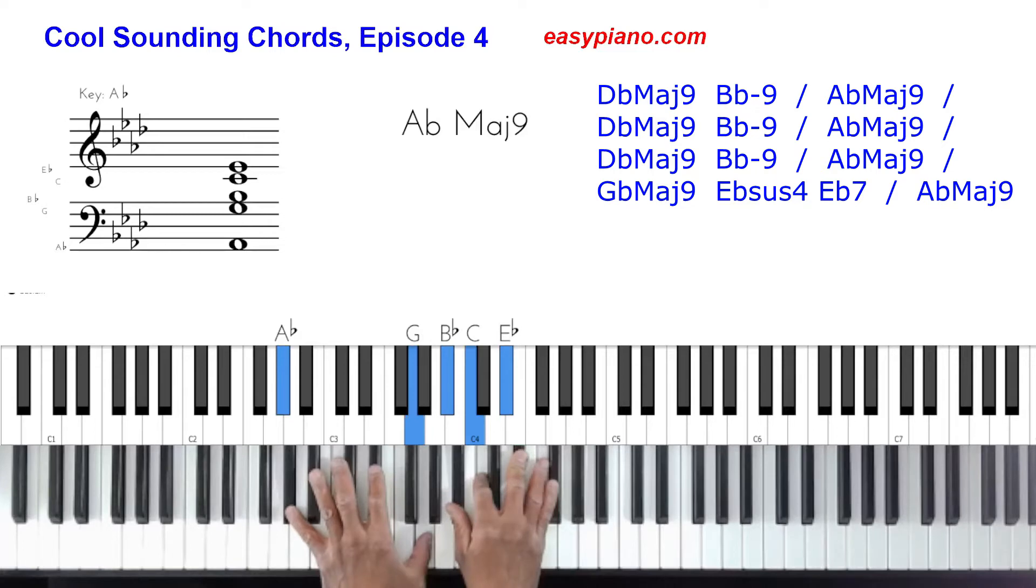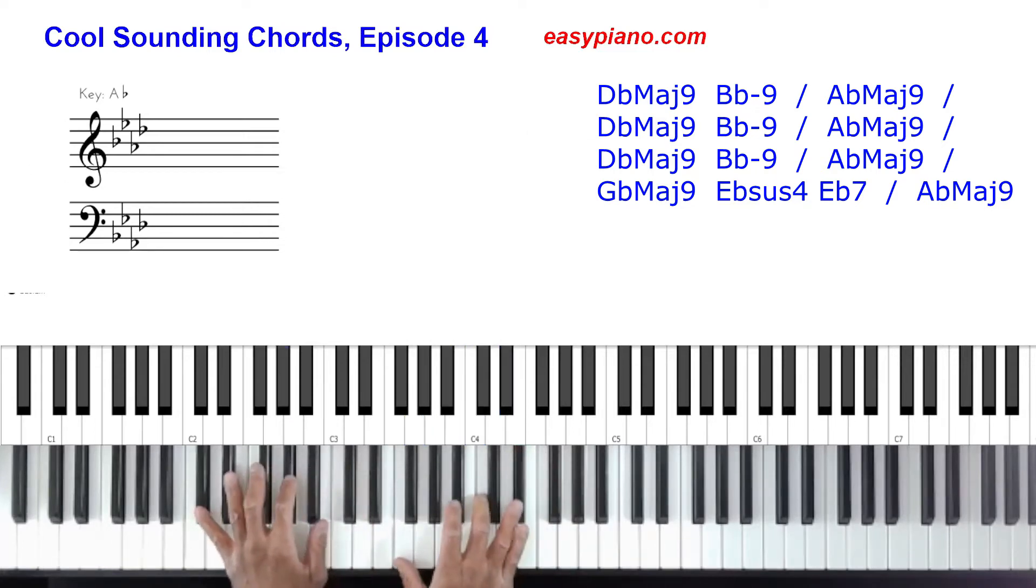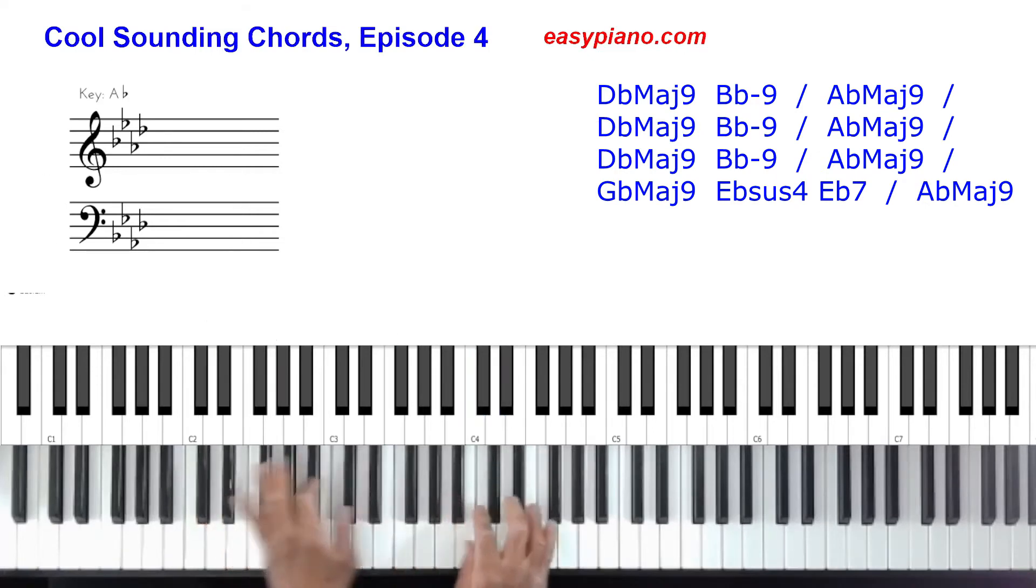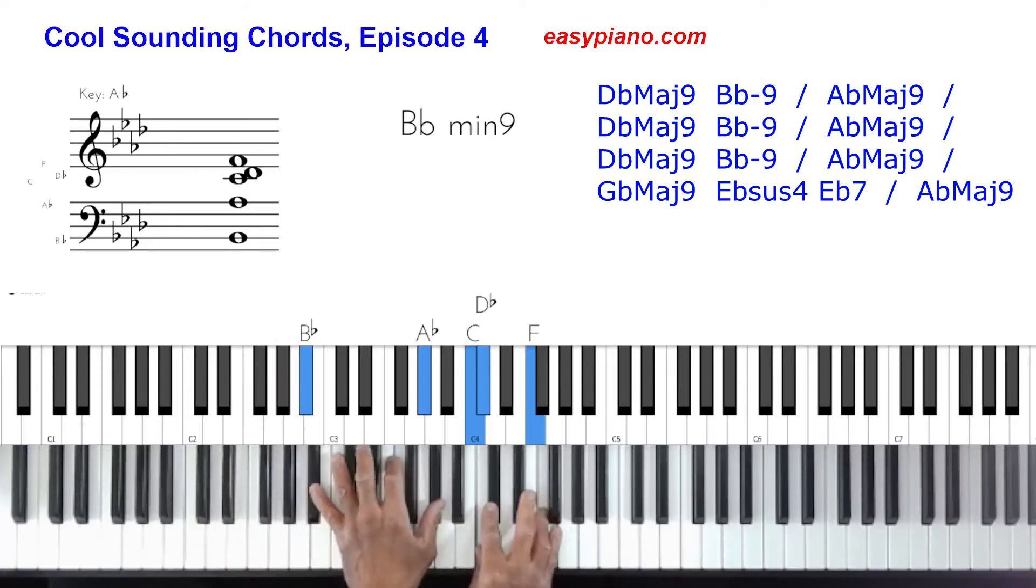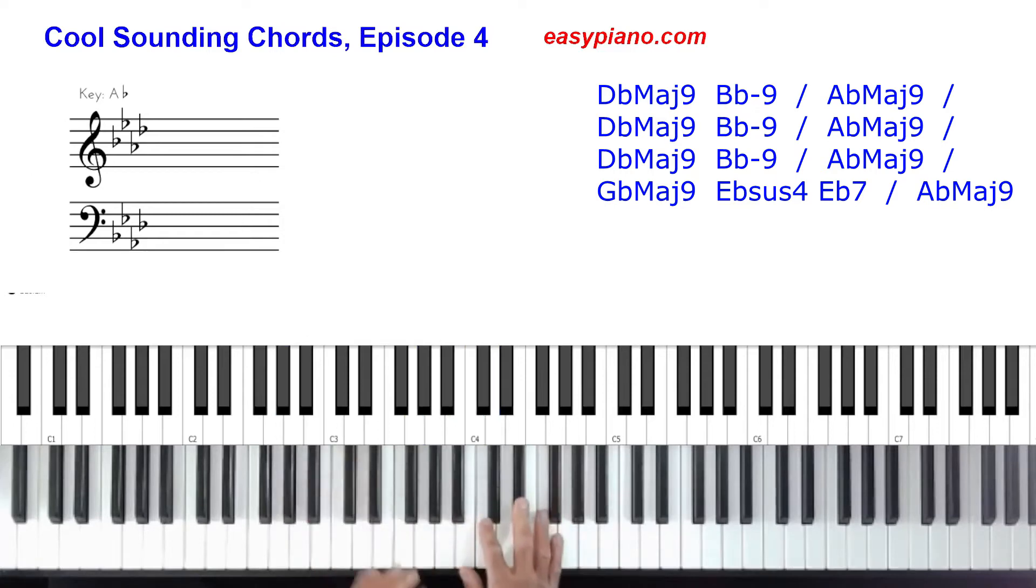Just playing those three chords, I have the D flat major nine, and that's going to be for two beats. One, two. Then B flat minor nine for two beats, and then we're going to the A flat major nine for four beats. We have to do that part right there three times.